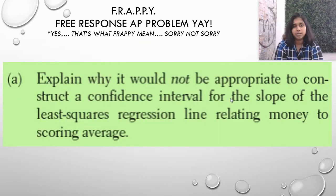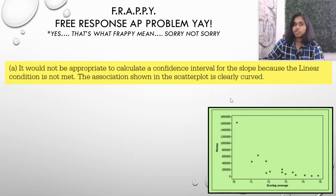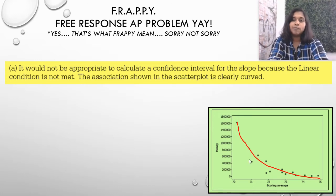Explain why it would not be appropriate to construct a confidence interval for the slope of the least squares regression line relating money to scoring average. To answer that question, I need the original scatterplot. There's the answer, but I'm going to go ahead and show it to you. It doesn't meet conditions, because look at this. That is not a linear line. How are you going to deal with slope of a line if you're not dealing with a line? You're dealing with a curve.